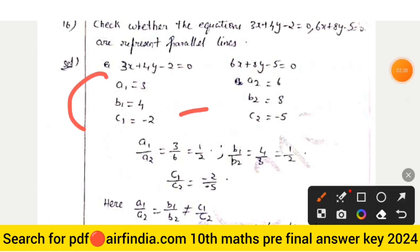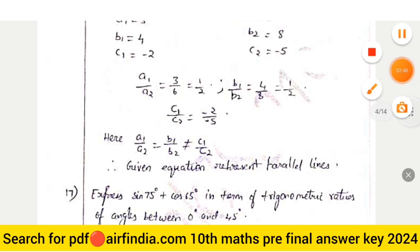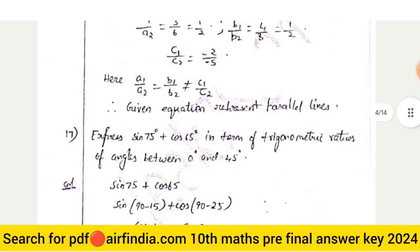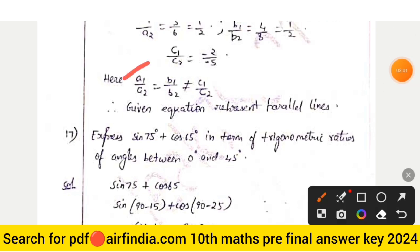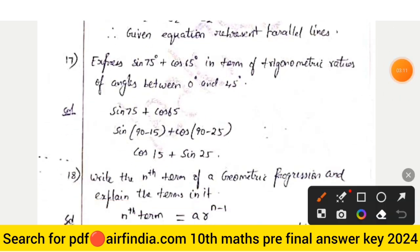Solving: c1 = −2 and c2 = −5. Then a1/a2 = 3/6 = 1/2, b1/b2 = 1/2, and c1/c2 = 2/5. Since a1/a2 equals b1/b2 but does not equal c1/c2, the given equations represent parallel lines.